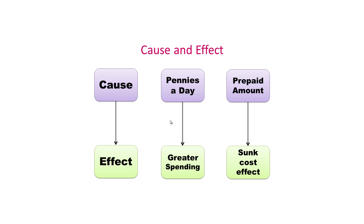For example, framing a price as pennies a day results in greater spending or a greater likelihood of donation. Likewise, in a sunk cost setting, increasing the amount that people prepay for a basketball game ticket increases the likelihood that they will fall prey to the sunk cost effect. In these cases, the framing of the price or the dollars spent prepaying for a ticket are the cause, while the greater spending or the greater sunk cost effect that occurs as a result is the effect.